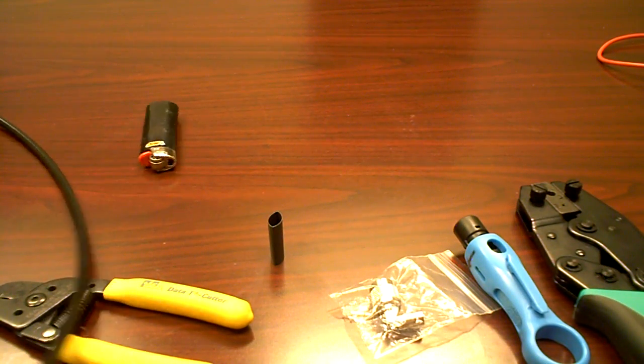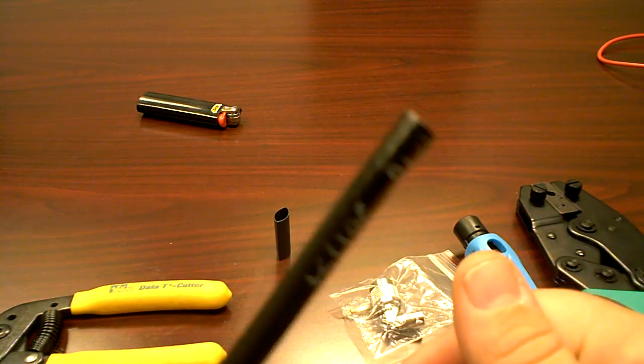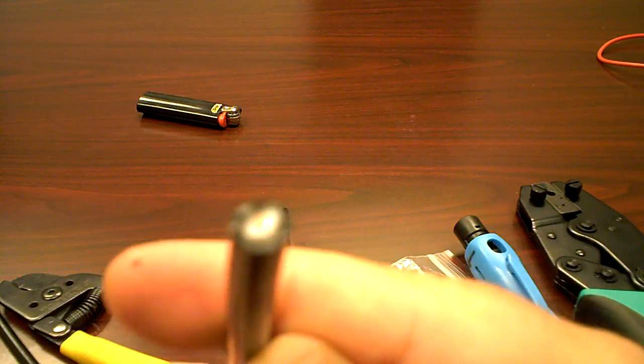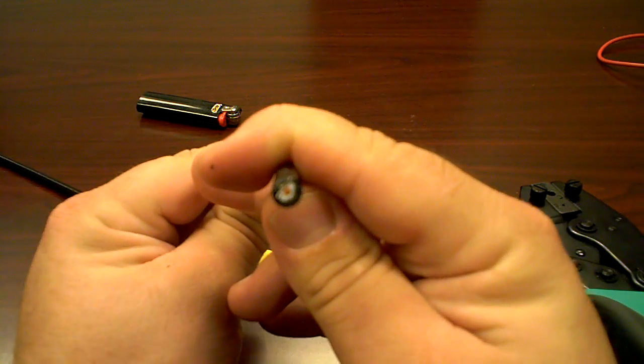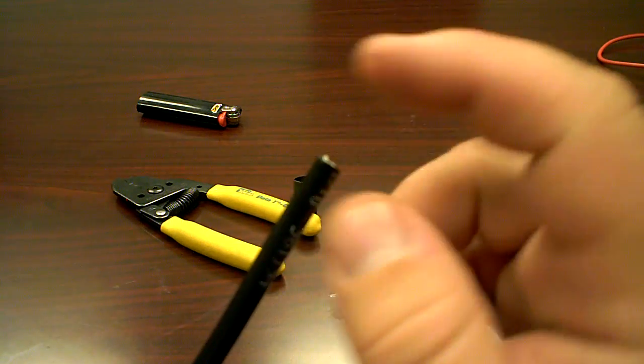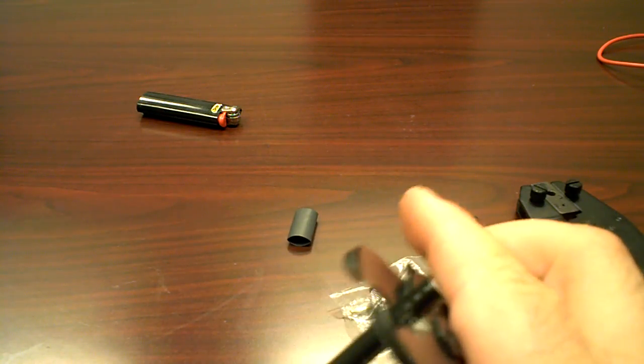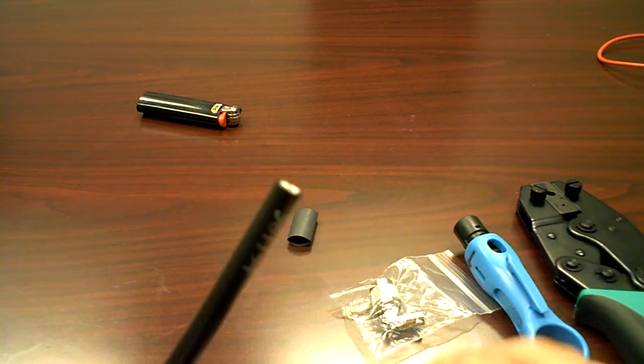Alright, basically we want to start, this is your LMR240. We always want to make sure we get a real clean cut on the end of that. No stray braid or anything. I'll go ahead and clip that for you real quick just to see.